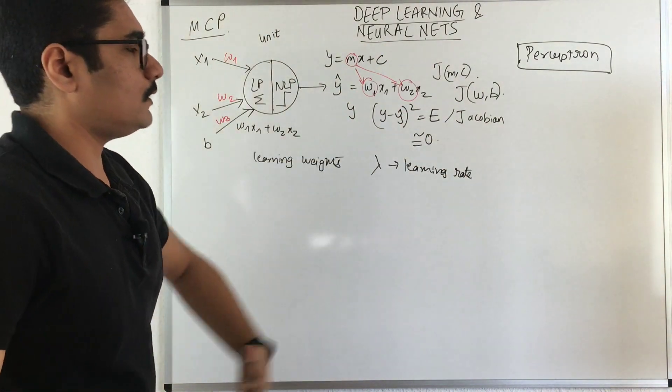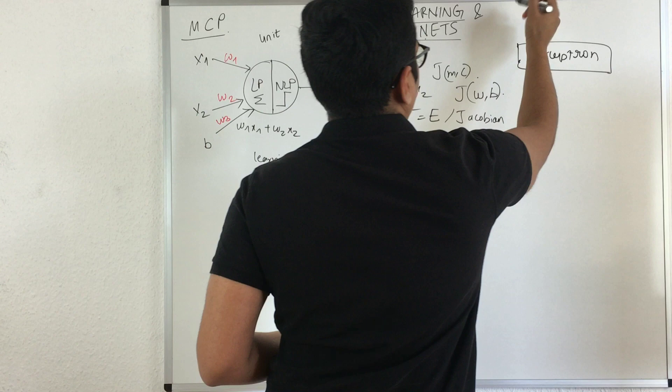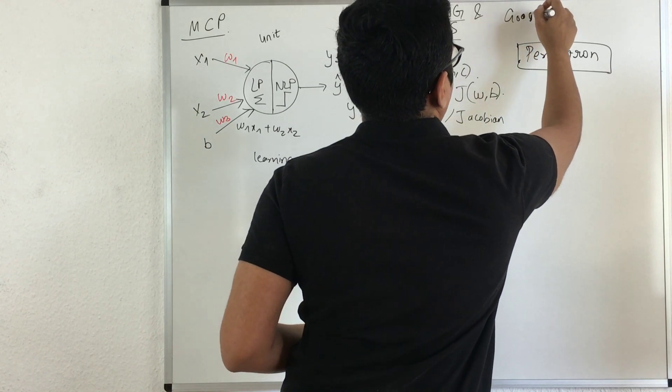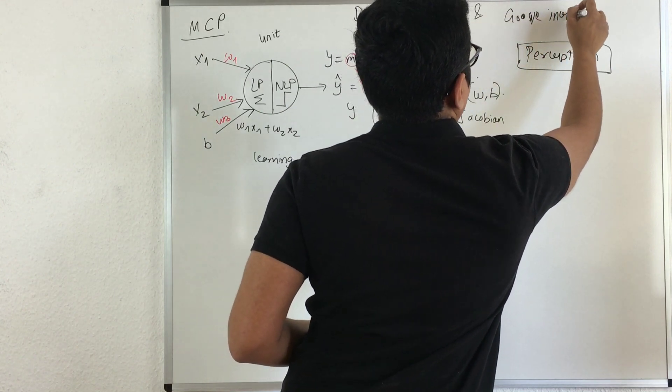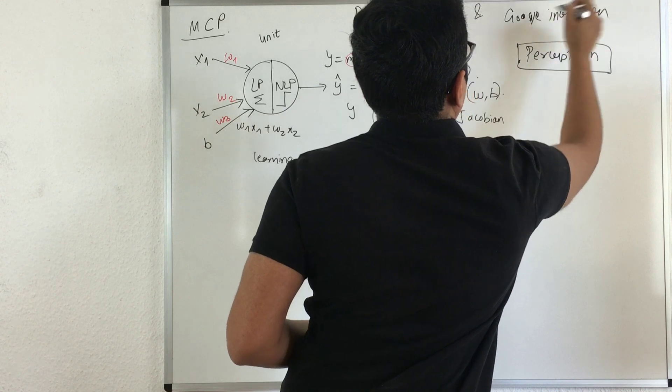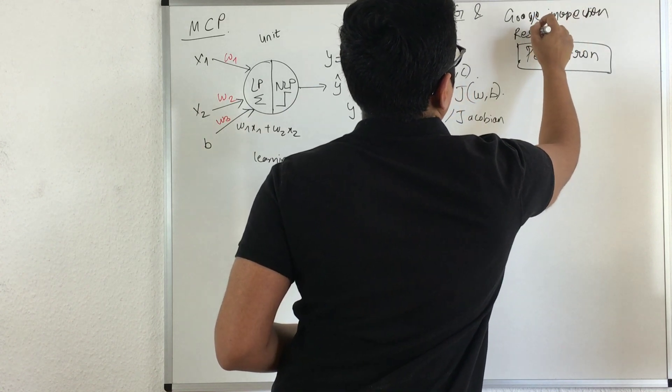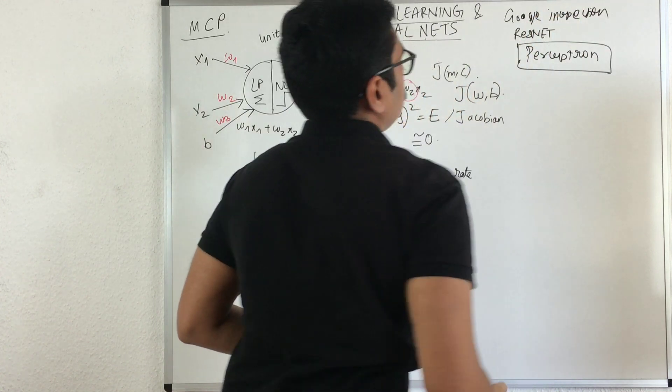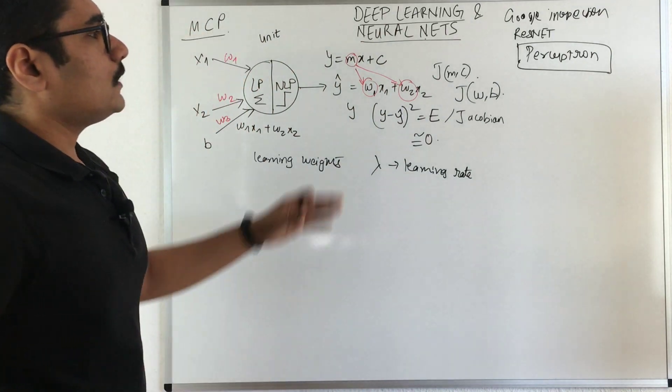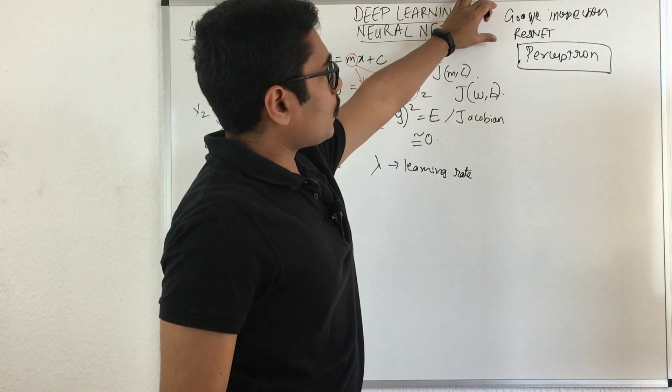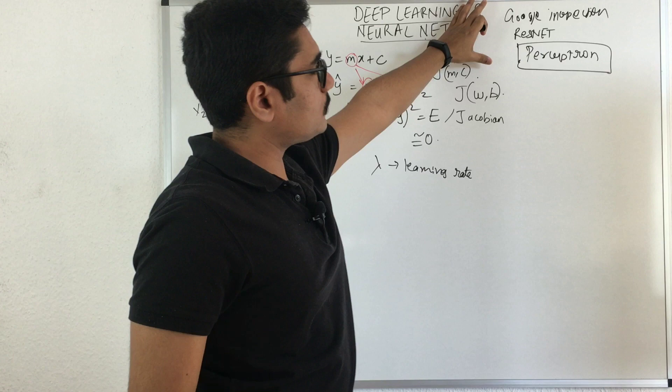Obviously, in today's world, we have Google Inception and Microsoft ResNet, that is residual network neural network. These are the two most prominent neural networks used in today's world.